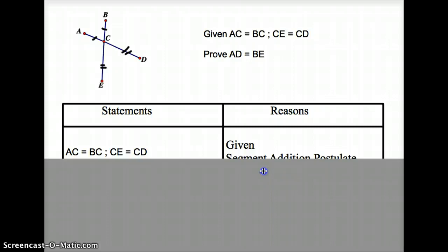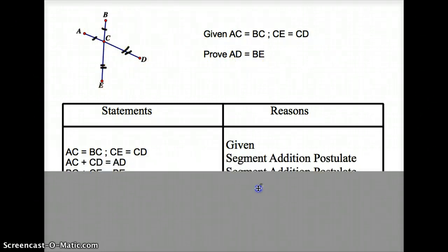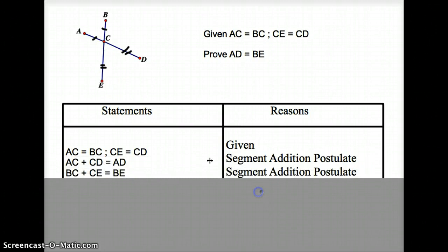So AC equals BC, CE equals CD. Our next step is going to be to add up these segments together, so we'll get to AD, which is what we're trying to prove, and BE. We could say that AC plus CD equals AD, and BC plus CE equals BE through the segment addition postulate.